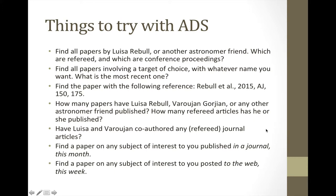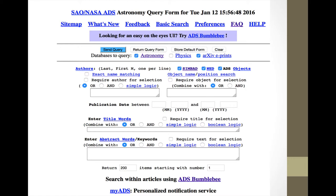Here are some things to try with ADS: find all papers by a particular astronomer; figure out which ones are refereed versus conference proceedings; search by a target of choice and find the most recent paper on that target; find a specific paper; look for how many refereed articles someone has published; check if two people have ever co-authored a refereed journal article together; or find a paper on any subject published in a journal this month or posted to the web this week.